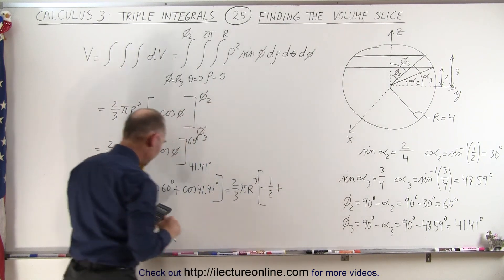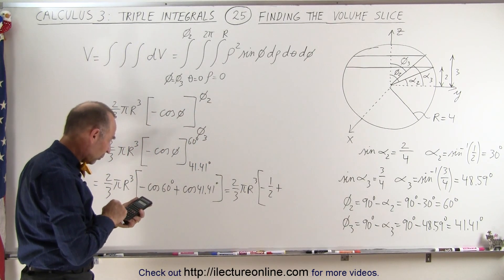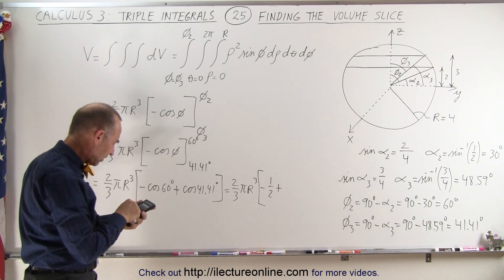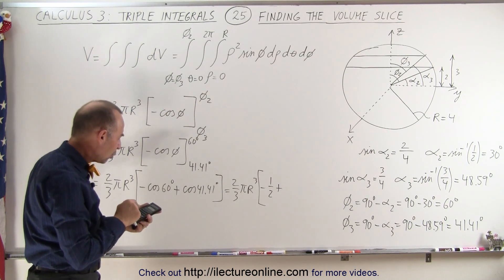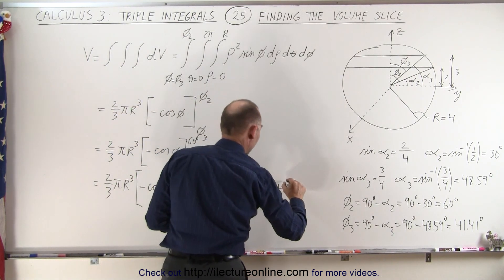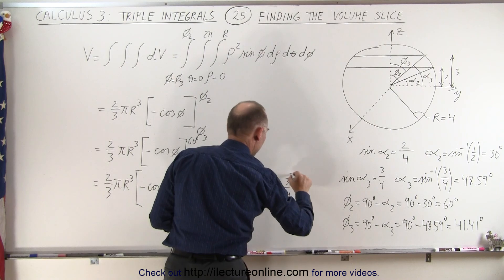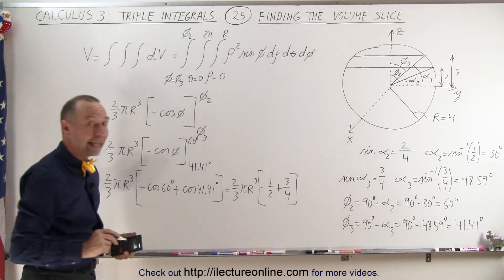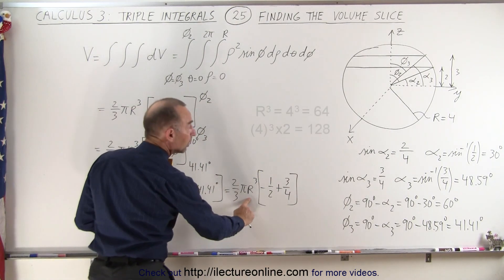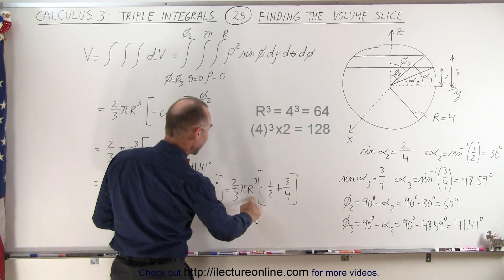41.41 degrees, take the cosine of that, that would be three quarters so that would be plus three quarters. And knowing that r is equal to 4, that would be 16 times 2 which is 32, so this gives us 32/3 π times